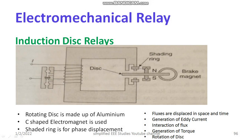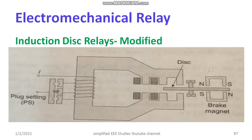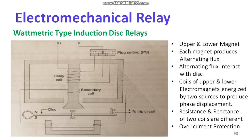I have written the details below. As you can see, this is a modified induction disc relay. You can see the brake magnet and the position of the disc and shaded rings to produce different fluxes. This is about the modified form of induction disc relay.